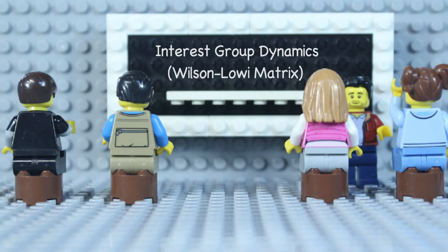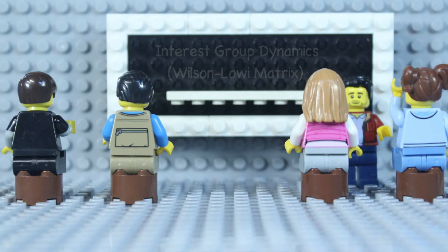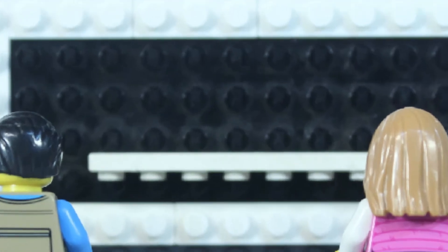This video talks about the Wilson-Lowy matrix, which is important for understanding interest group politics, which in turn helps explain a lot about how politics affects policy outcomes. Let's get into it.